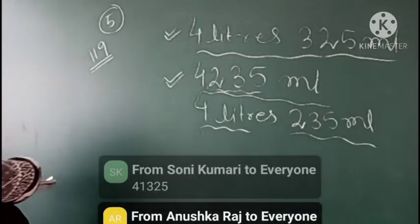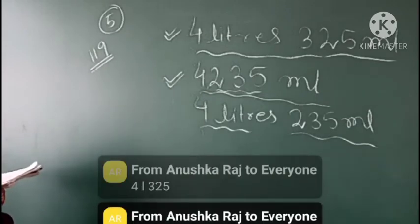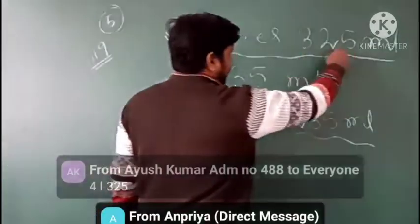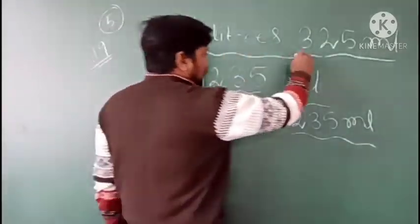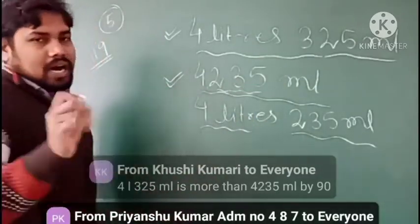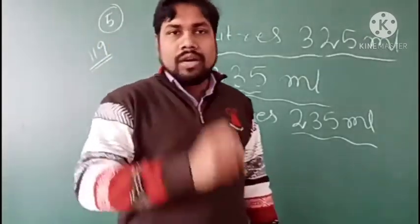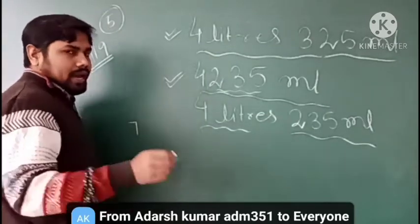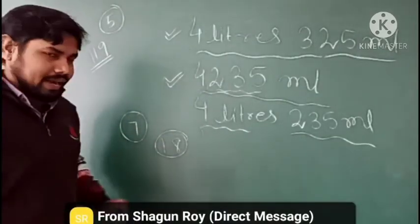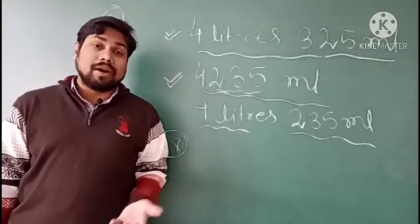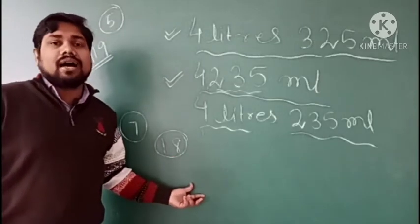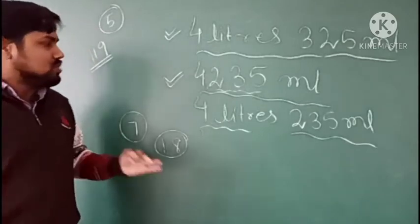So quickly tell me in the message: 4325 milliliters and 4 liters 325 milliliters is the greater value. Now if you want to find how much greater, you do the subtraction — just like if two numbers are there, you subtract to find the difference.